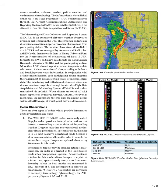There are four types of radars which provide information about precipitation and wind. 1. The WSR-88D NEXRAD radar, commonly called Doppler radar, provides in-depth observations that inform surrounding communities of impending weather.